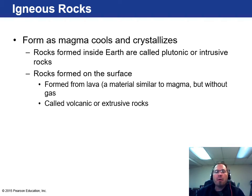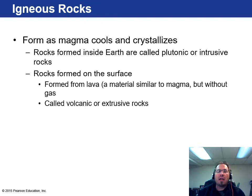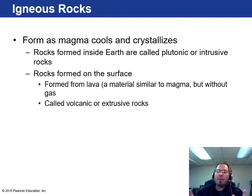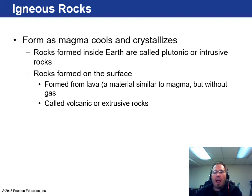Igneous rocks form from the crystallization of magma. The magma comes to the surface of the earth in the form of blobby lava stuff, and forms inside or outside the earth. Most actually form within the earth — the plutonic type. A lot of the stuff that forms, you never see. Like in Hawaii, you see lava flowing over the ground, but a lot is forming underground as well. The difference between lava and magma is that magma is what's in the ground, and lava is what happens when it reaches the surface. These are called extrusive or volcanic rocks.